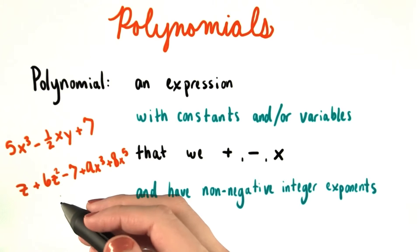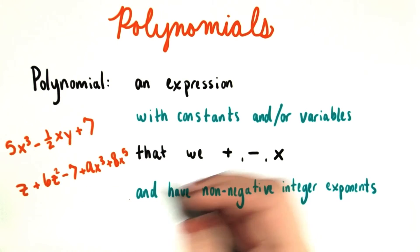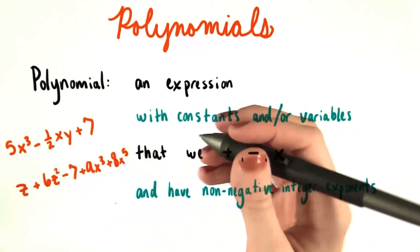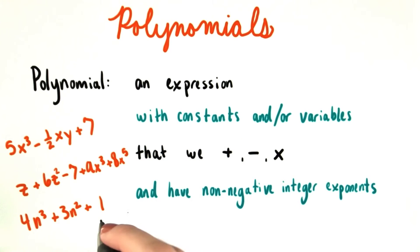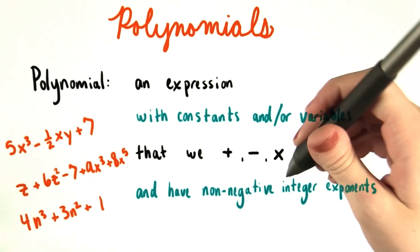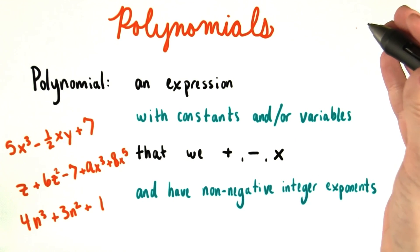But oftentimes, we'll also see polynomials that have just one variable involved, or maybe even none. So an example of that might be something like 4n cubed plus 3n squared plus 1. But again, any combination of constants and variables using these operators and only these kind of exponents makes a polynomial.